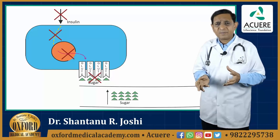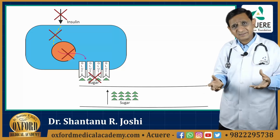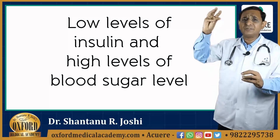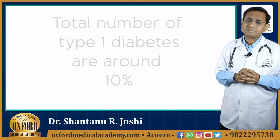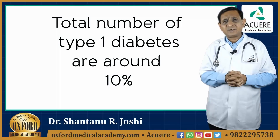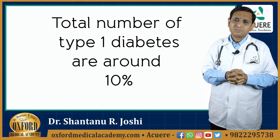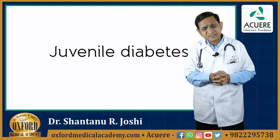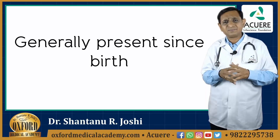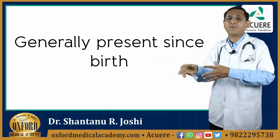Naturally, when insulin is not available, entry of sugar will not take place and the blood sugar level will rise. In this case, the patient will have low levels of insulin and high levels of blood sugar. Among the total patients of diabetes, type 1 patients are generally around 10%. This is also known as juvenile diabetes. It is generally present since birth — it doesn't mean it will be recognized at birth, but it is present at birth and may be recognized with some diabetic complications.